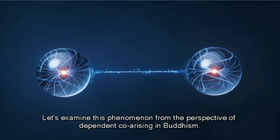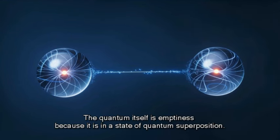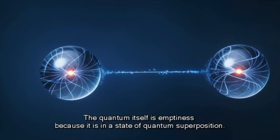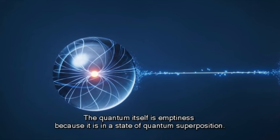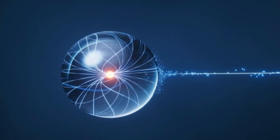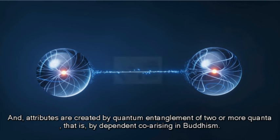Let's examine this phenomenon from the perspective of dependent co-arising in Buddhism. The quantum itself is emptiness because it is in a state of quantum superposition. And attributes are created by quantum entanglement of two or more quanta — that is, by dependent co-arising in Buddhism.